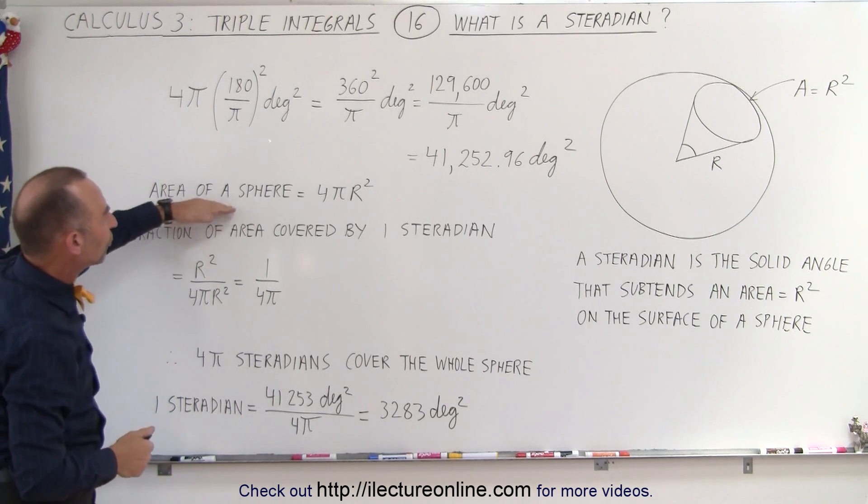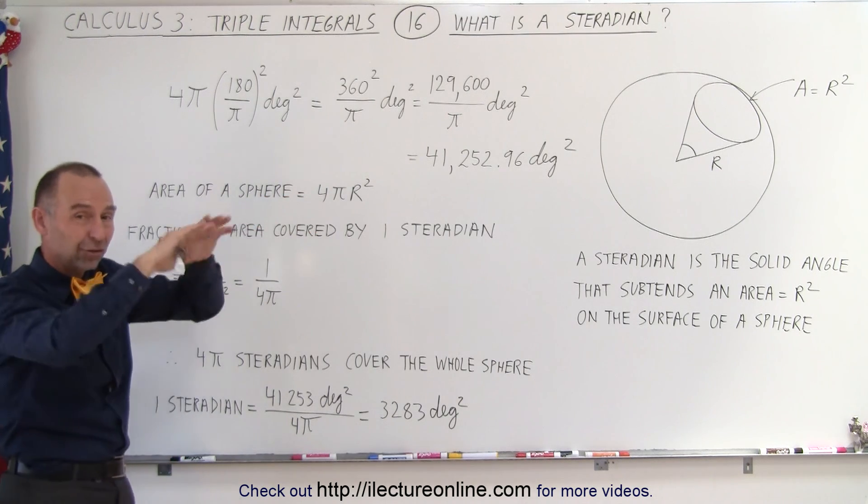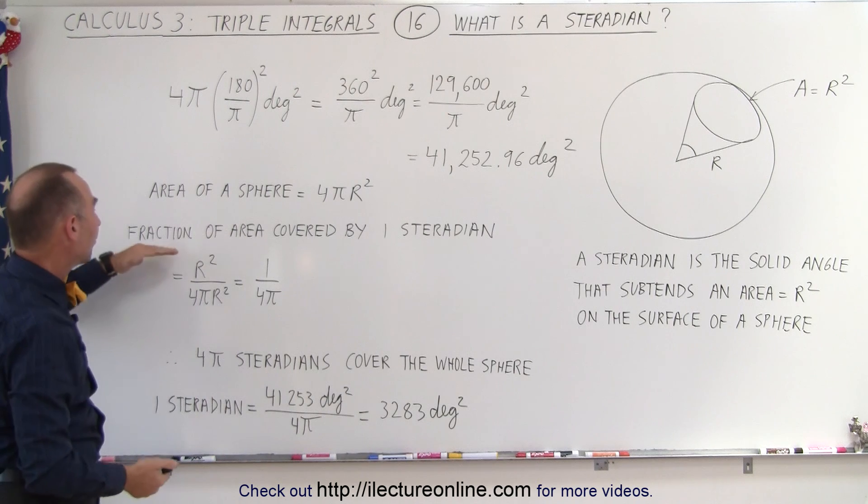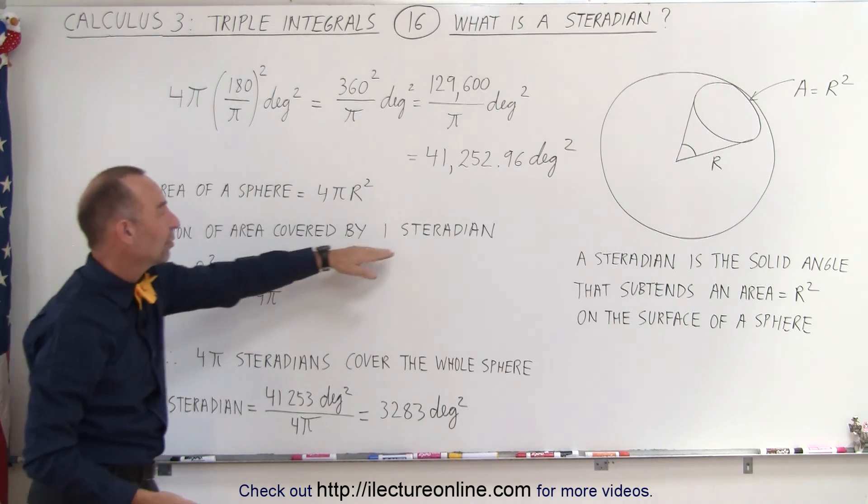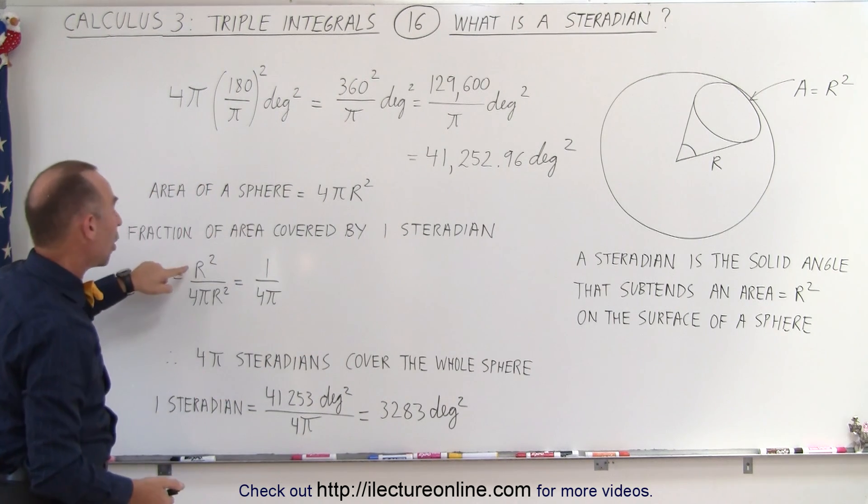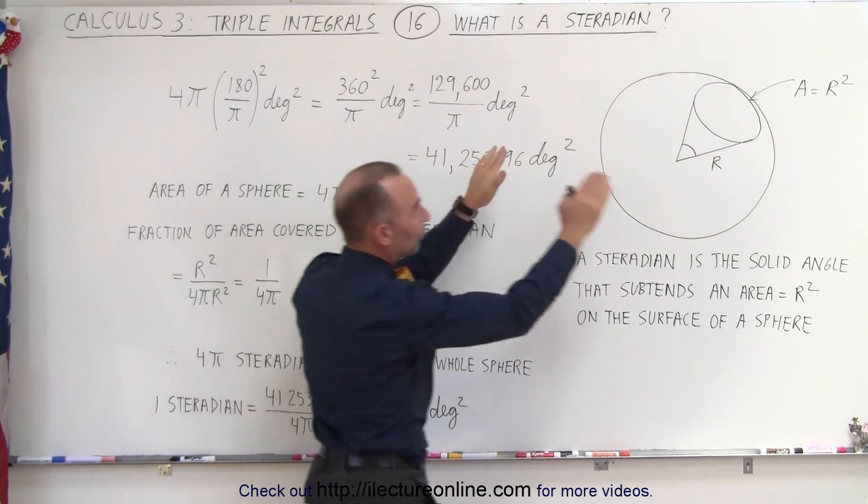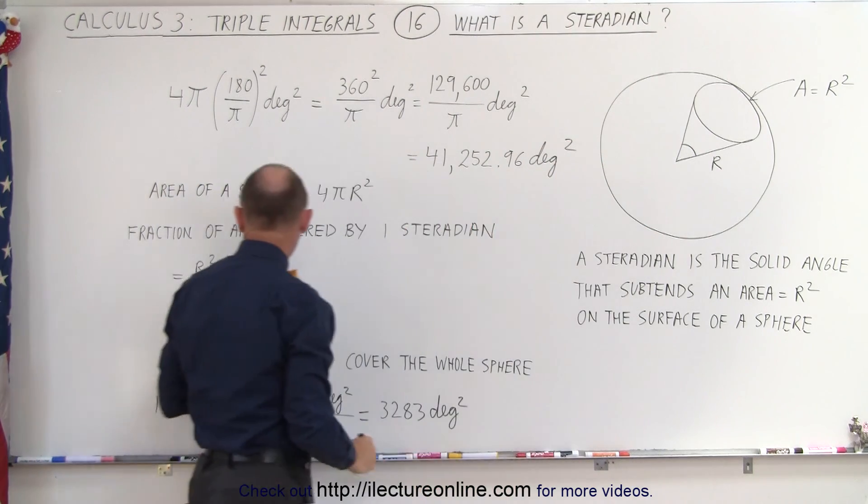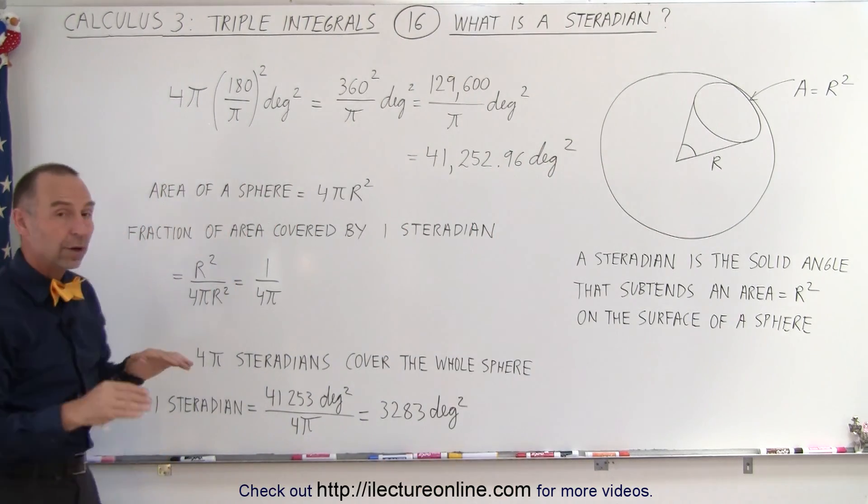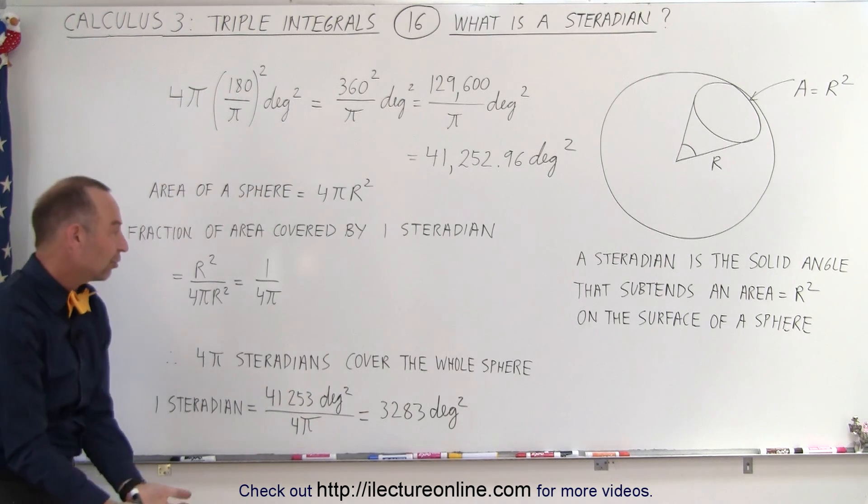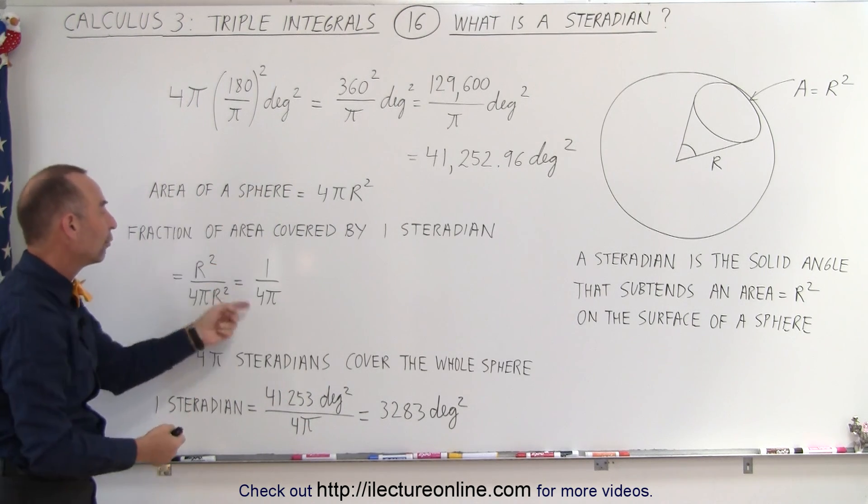So the angle that subtends an entire sphere is about 41,253 degrees. Since the area of a sphere is 4 pi r squared, that's the surface area of a sphere, the fraction of the area covered by one steradian, we simply take r squared, which is the surface area covered by one steradian, divided by 4 pi r squared, which is the surface area of an entire sphere. That fraction is 1 over 4 pi,